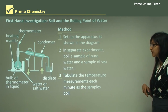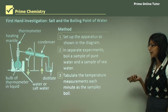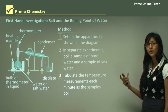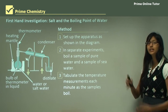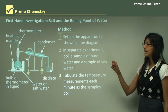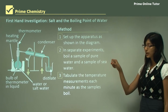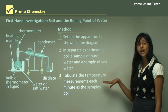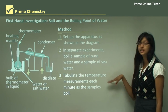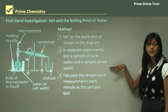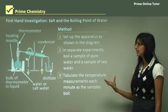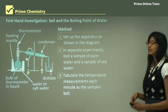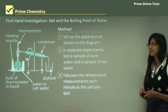Tabulate the temperature measurements each minute as the samples boil. You want to record the boiling point, so make sure every minute you take a record of the temperature change. You need to know at what temperature the water starts boiling and record the temperature at every minute.